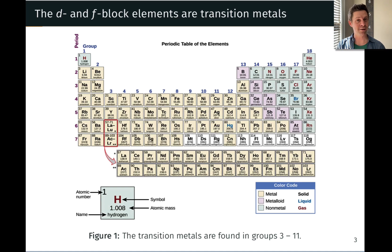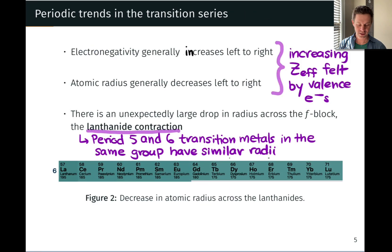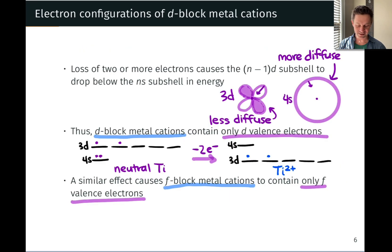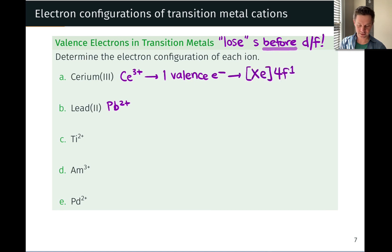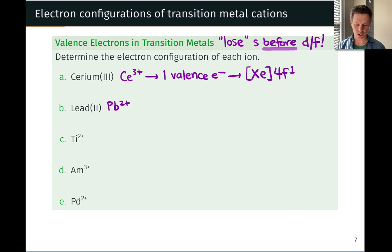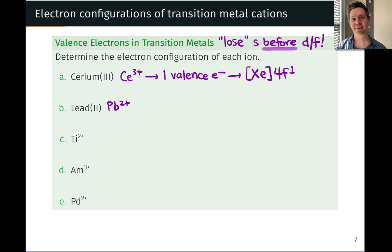We might be tempted to say that Ce³⁺ has the same configuration as cesium — something like 6s¹. But remember, in lanthanide cations, the 6S orbital is higher in energy than the 4F orbital. So the one remaining valence electron in Ce³⁺ is located in the 4F orbital. The abbreviated electron configuration is [Xe]4f¹ — lose the S electron before the F electron; the remaining valence electron goes into a 4F orbital.